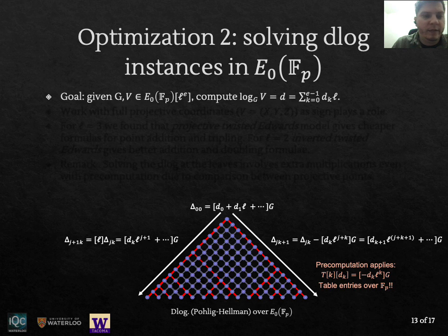Now the instance of the discrete logarithms we have to solve are over the initial curve E0 over F_p. And the modeling to solve these logarithms via Pohlig-Hellman is very similar to the finite field case, where you just start with the challenge as being the root of the tree, which is now going to be a point on the curve, retaining additive notation here. And basically going to the left, now instead of raising to the power of ℓ, you just multiply the point by ℓ and going to the right, just removing a digit by doing a point subtraction.